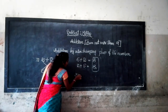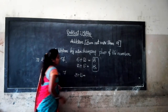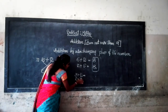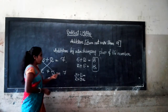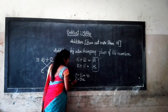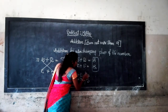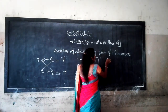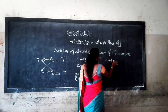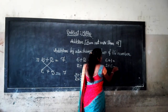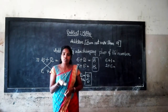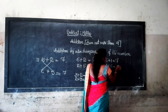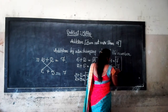Let's show: 3 plus 2. The interchanging place of the number is 2 plus 3. 3 plus 2 equal to 5. Then 2 plus 3 is equal to 5. Answer is same, there is no change. Then 6 plus 1 or 1 plus 6 — what is the sum of 6 plus 1 and 1 plus 6? 6 plus 1 is 7, and 1 plus 6 is also 7. Answer will be same.